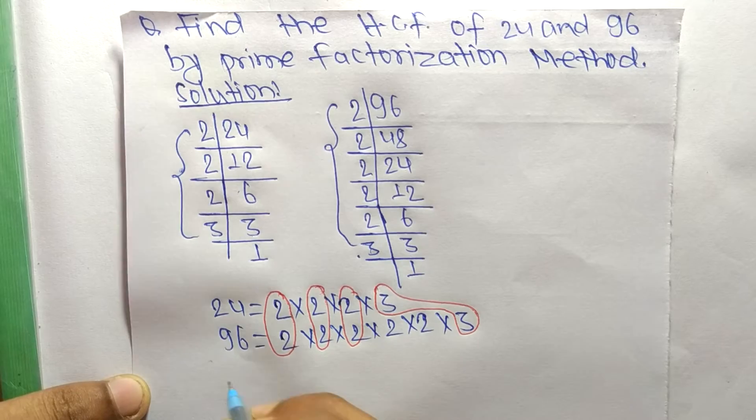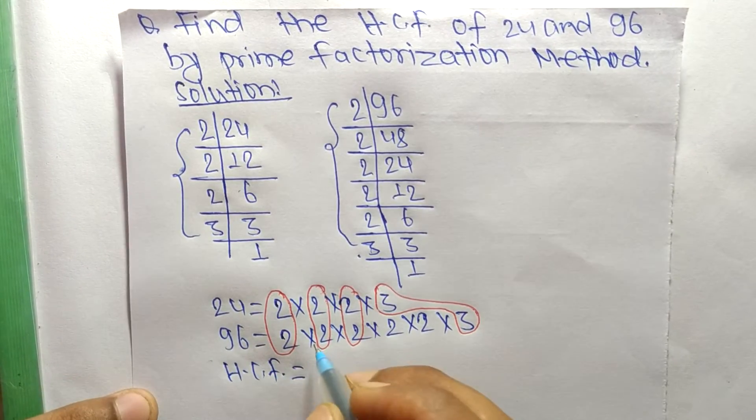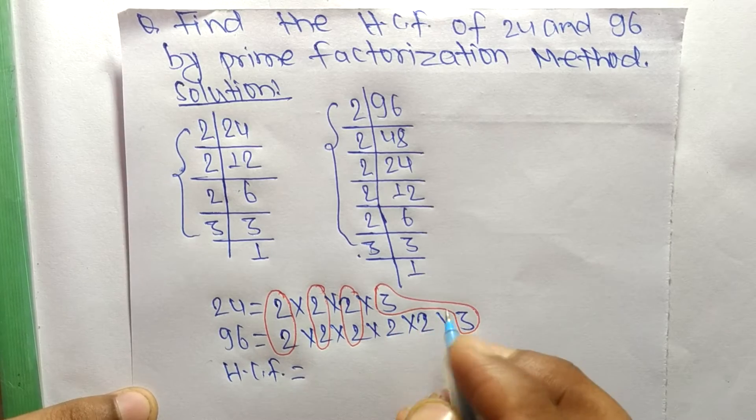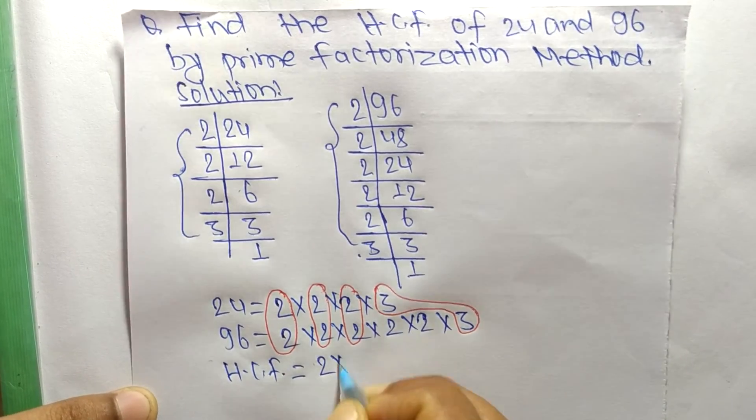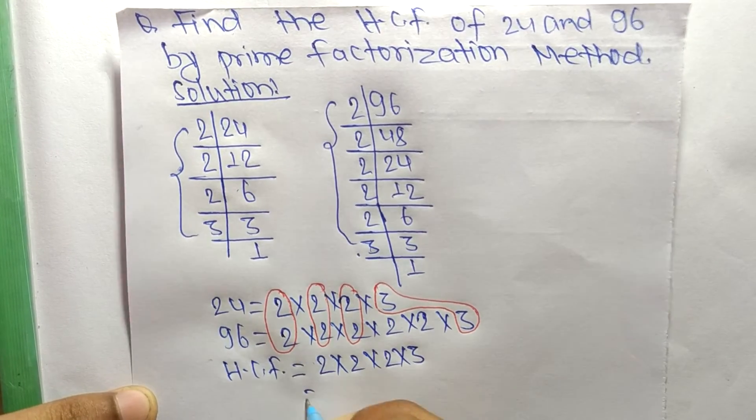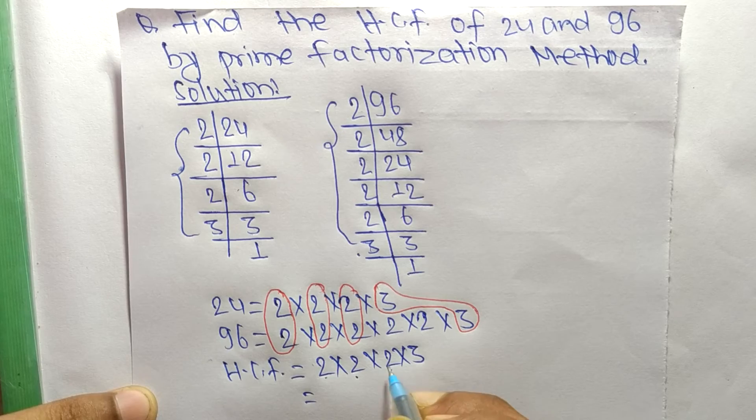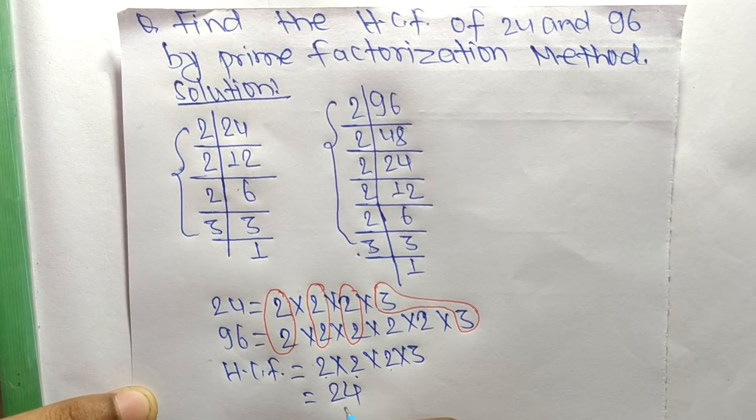Now we can write HCF equals the product of these common factors, which is 2 times 2 times 2 times 3. So 2 times 2 equals 4, 4 times 2 equals 8, and 8 times 3 equals 24.